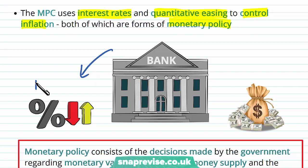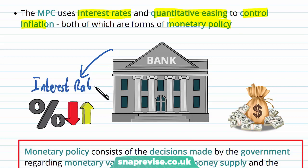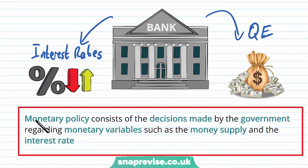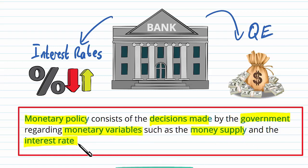We have learned how the central bank can influence inflation rates using interest rates, and we will be learning more directly about how quantitative easing, or QE, will manage inflation. Monetary policy consists of the decisions made by the government regarding monetary variables such as the money supply and the interest rate.